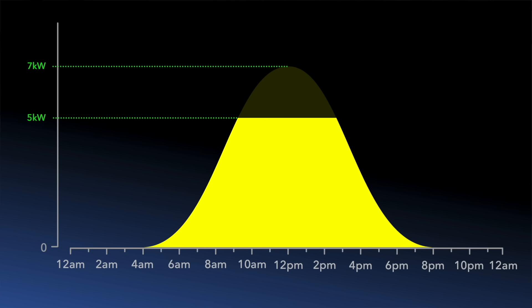Now that we have an understanding of what solar clipping is, if your installation suffers from clipping, what can you do about it? The first action to take is to establish the size of the problem. If we look again at the clipped generation in our example, the difference between the maximum power that the array can supply — 7 kilowatts — and the power that we can actually acquire represents a 29% reduction.